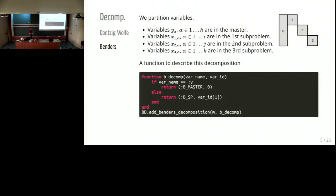Sometimes the structure of the matrix is a little bit different. Instead of having linking constraints, we have linking variables. In that case, we use the Benders decomposition. We can see that annotating the variables is sufficient to describe the decomposition. In the same way as the previous decomposition, the user writes a function that takes as arguments the name of the variable and its ID, and we provide this annotation function with add benders decomposition.